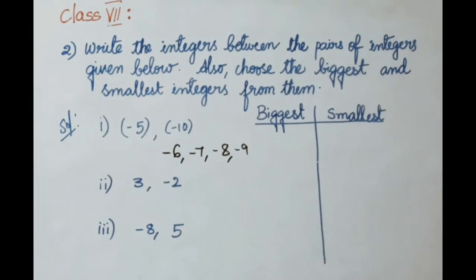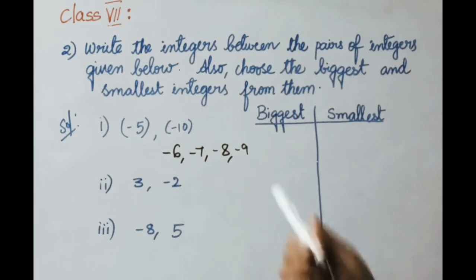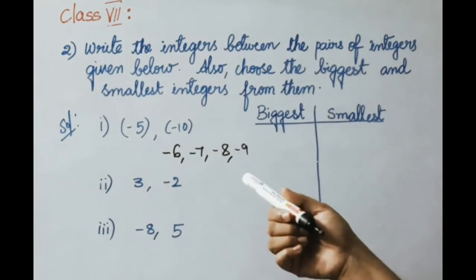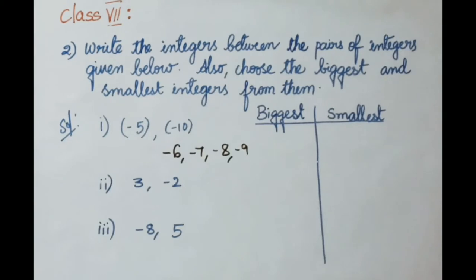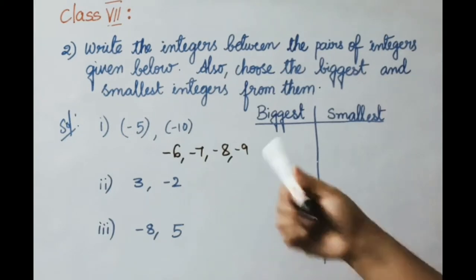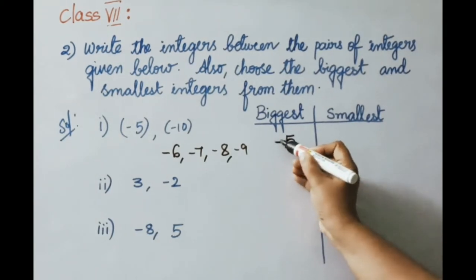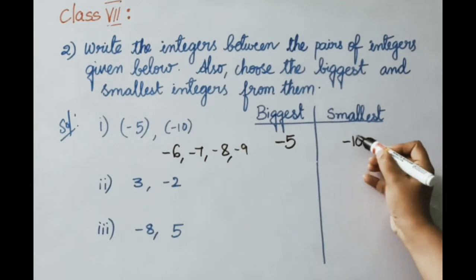Among the two integers minus 5 and minus 10, which is the greatest? When we compare two negative integers, the smallest negative integer will be the big number and the greatest integer will be the smallest in value. So, the biggest integer is minus 5 and the smallest integer is minus 10.